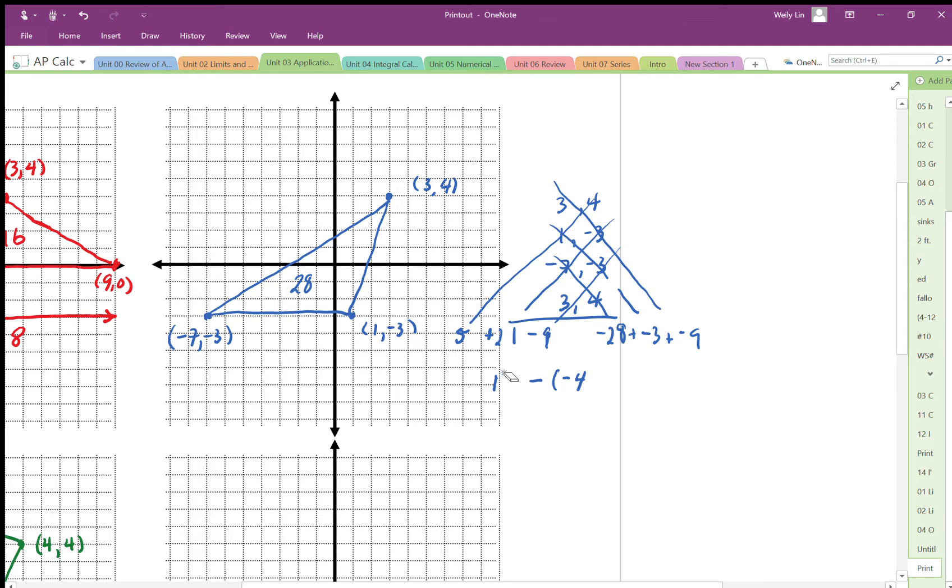Minus 40, negative 40. So that's 16. So that's going to be negative 16 minus 40, so we end up with 56 divided by 2, gives me the area of 28.